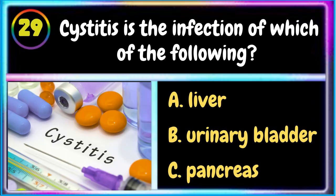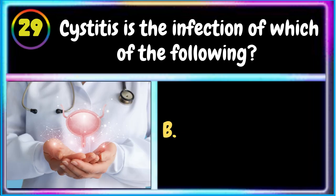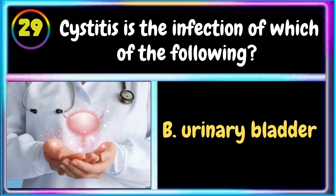29. Cystitis is the infection of which of the following? A. Liver. The correct answer is B. Urinary bladder.